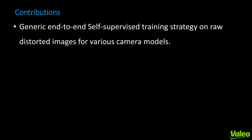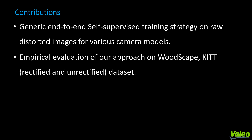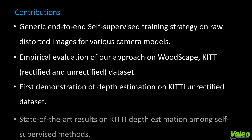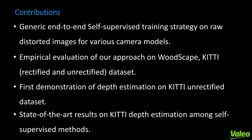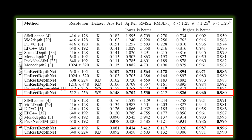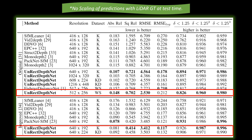The main contributions of our work are: a generic end-to-end self-supervised training strategy on raw distorted images for various camera models; an empirical evaluation of our approach on WoodScape, KITTI rectified, and unrectified datasets; the first demonstration of depth estimation on the KITTI unrectified dataset; and state-of-the-art results on KITTI rectified depth estimation among self-supervised methods. Our quantitative results showcase performance on KITTI rectified, unrectified, and fisheye images. KITTI rectified results outperform almost all state-of-the-art monocular approaches. The KITTI distorted results also surpass most previous self-supervised outcomes. We do not scale our predictions with LiDAR ground truth during test time as we achieve scale-aware depth and distance estimates.